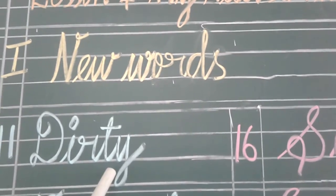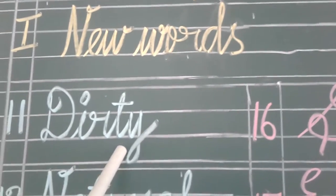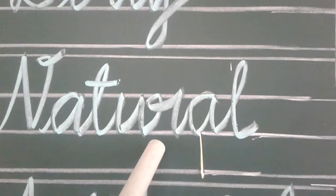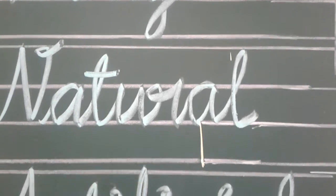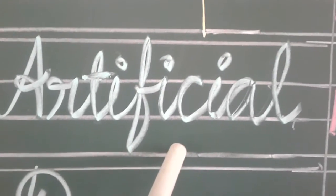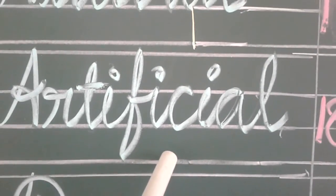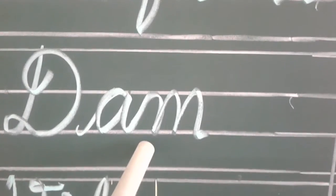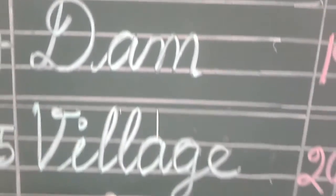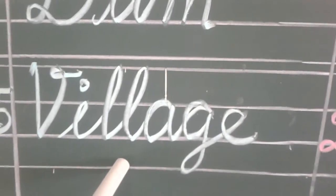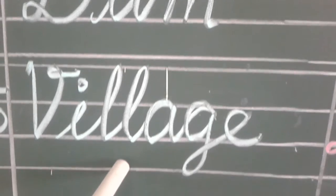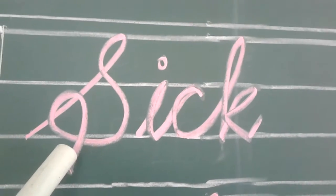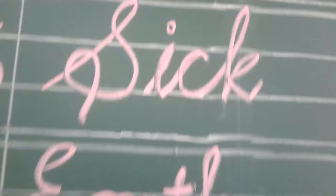Dirty? Alk. Natural? Eerkai. Artificial? Sairkai. Dam? Anakattu. Village? Gramam. Sick? Noi.